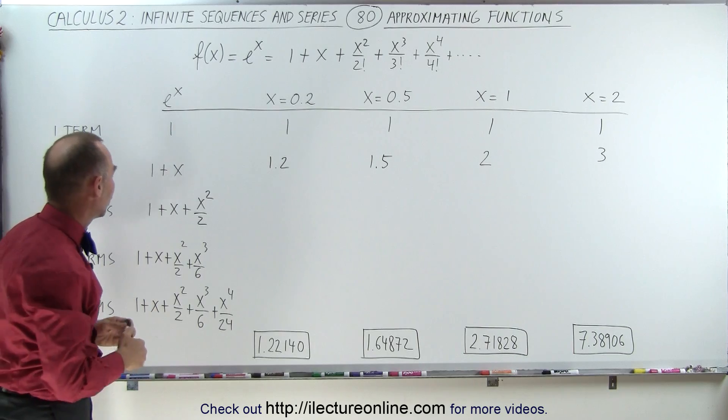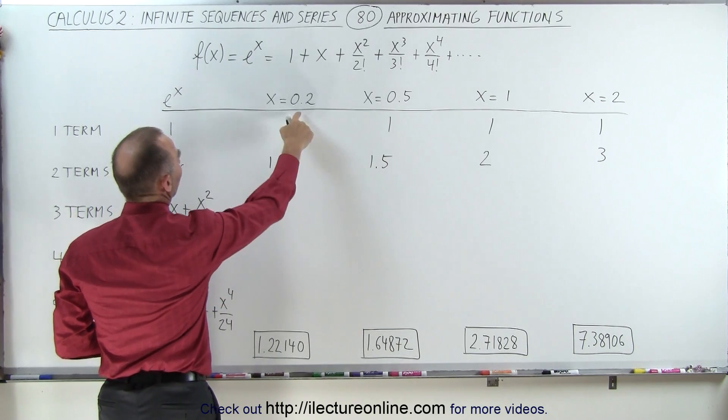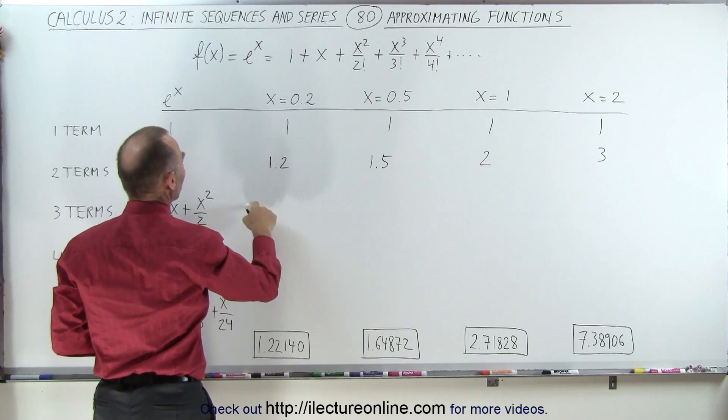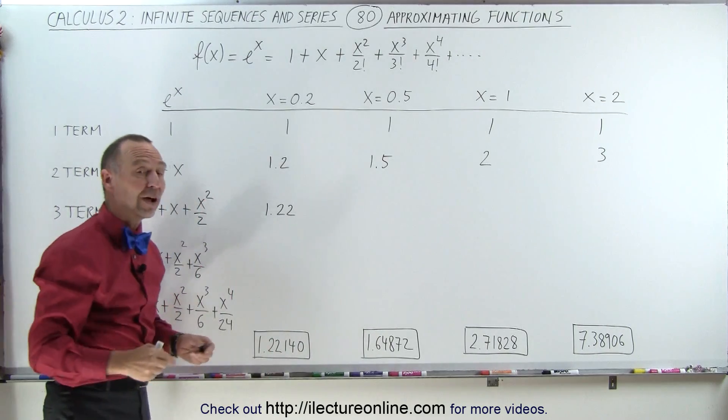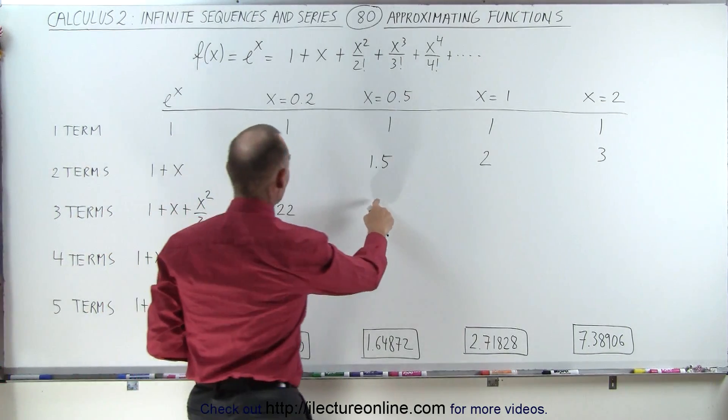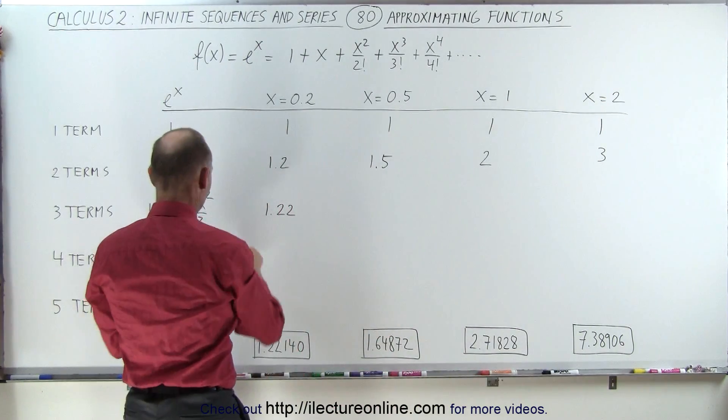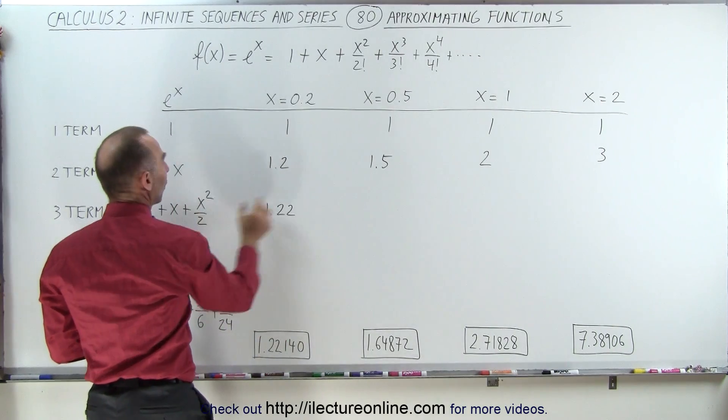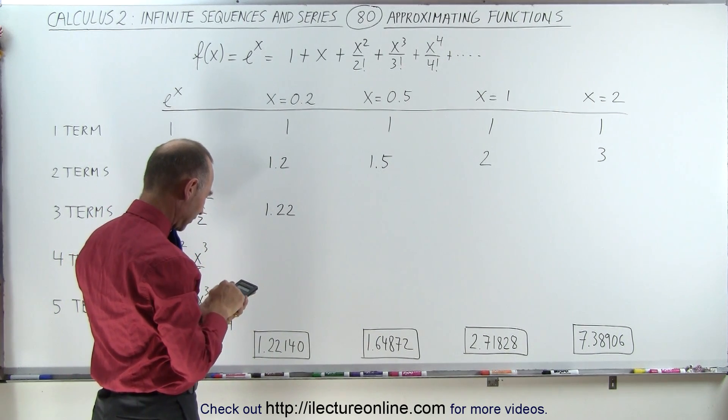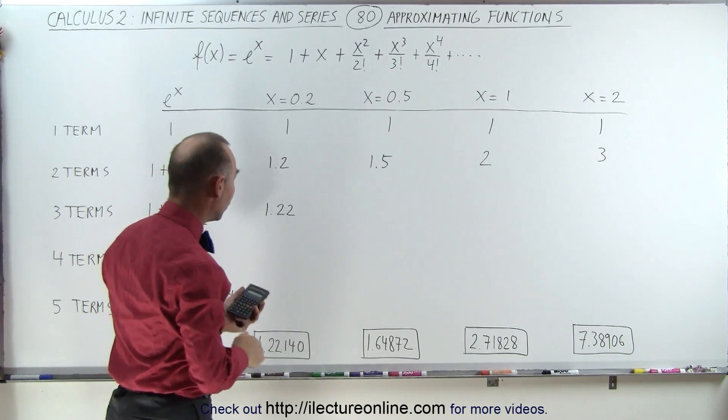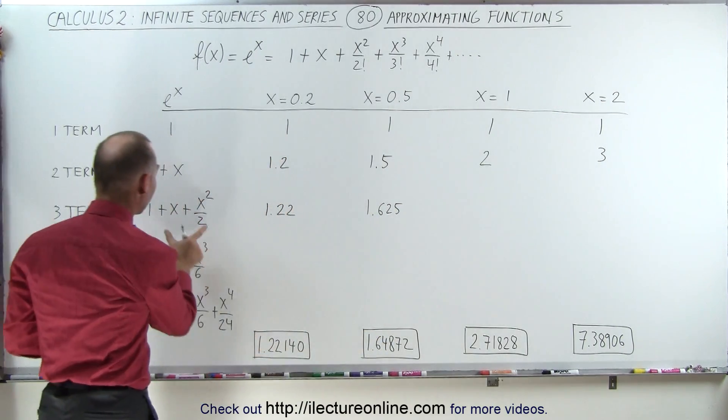Now let's take three terms. So now I have 1 plus x plus x squared over 2. Now x squared, if you have 0.2, that's 0.04 divided by 2, which is 0.02. So we get 1.22. And notice how close we are to the actual value to five decimal places. When we get to 0.5 here, we add 1.5 plus 0.5 squared divided by 2. So 1.5 plus 0.5 squared divided by 2 equals, we get 1.625. And here we're also beginning to get reasonably close after only the first three terms.